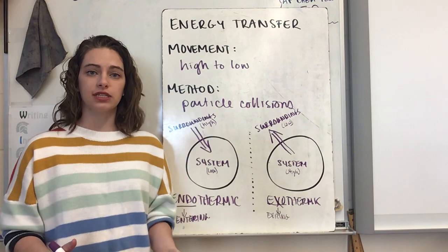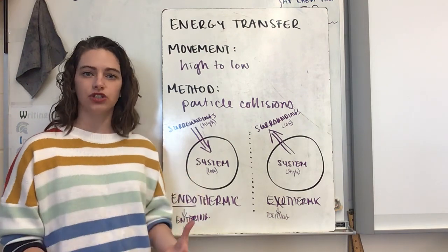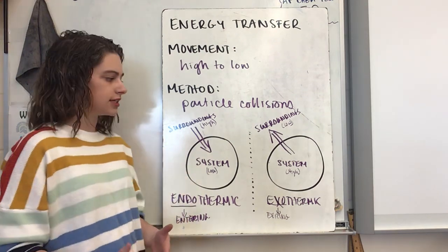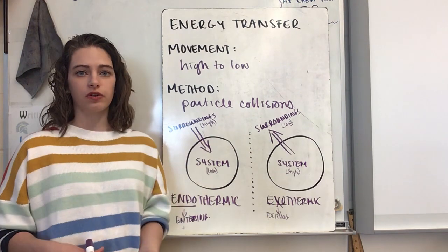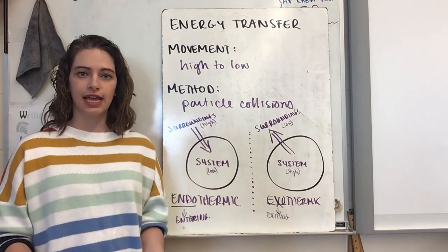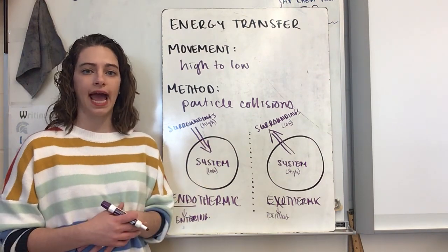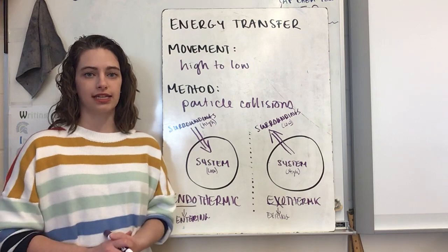We're going to go into more detail about the calculations and the nature of all of these in later objectives, but this gives you a general overview of what energy is and the two forms — thermal and chemical — that we're going to look at in this chemistry class.